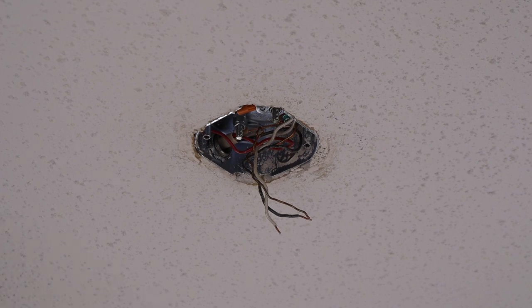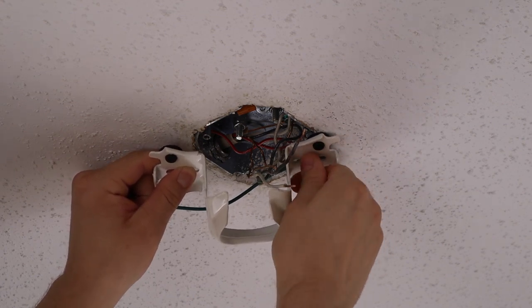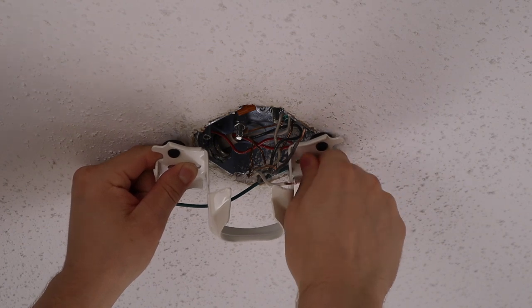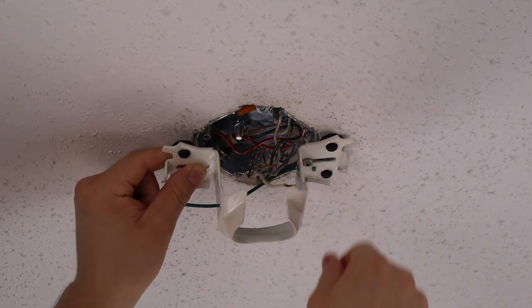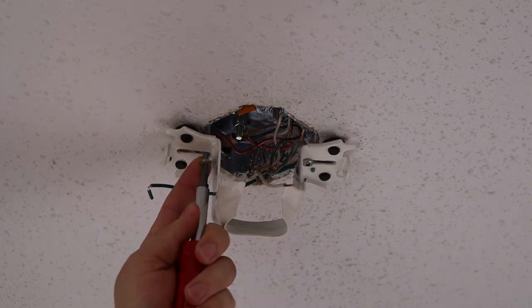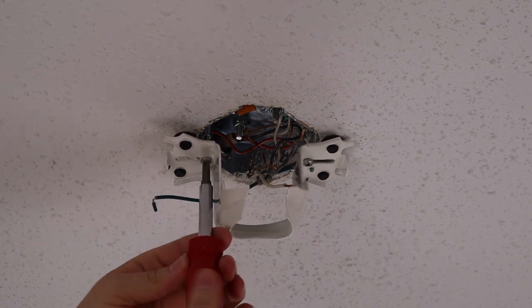Attach the mounting bracket to your electrical box or building structure using appropriate screws. Ceiling fans should only be mounted to electrical boxes visibly marked as being suitable for ceiling fan support. If you are at all in doubt of your electrical infrastructure, contact a qualified electrician. Tighten the bracket until the rubber pads sit flush against the ceiling.